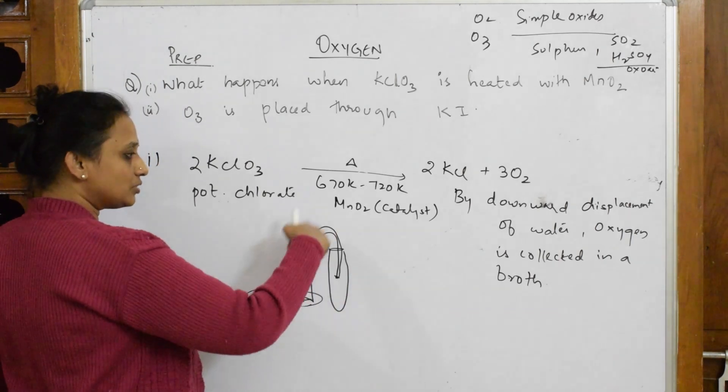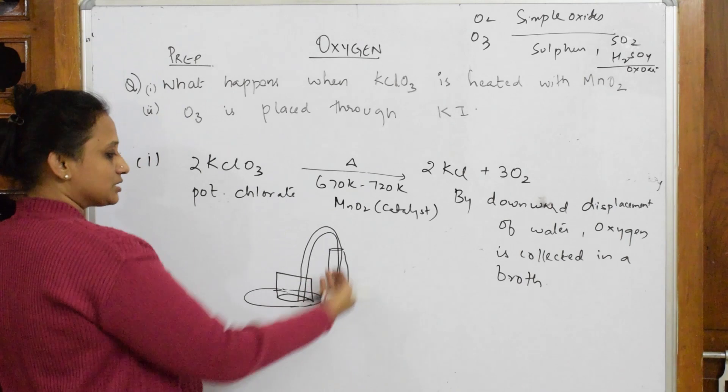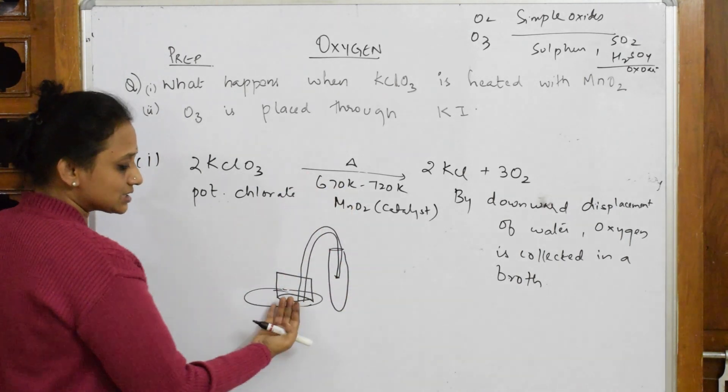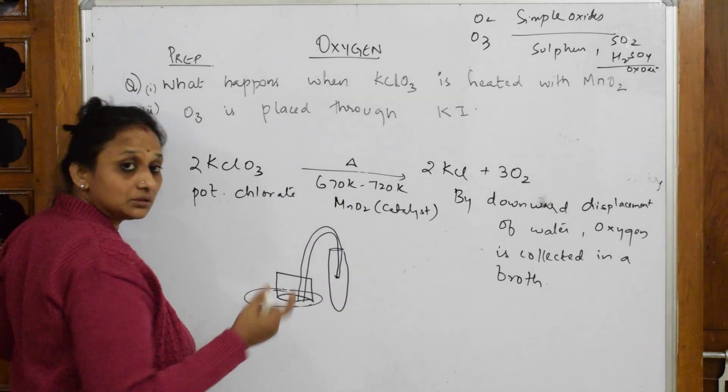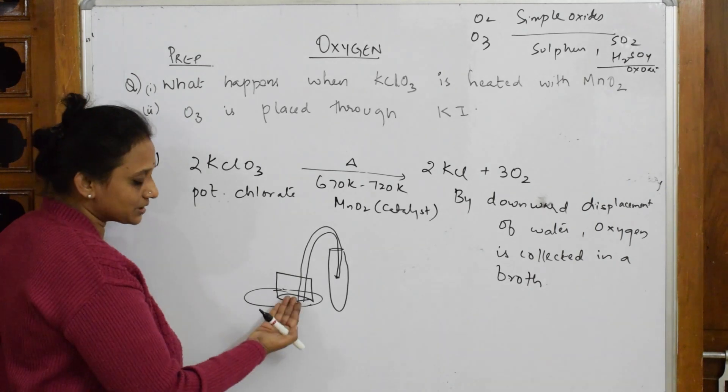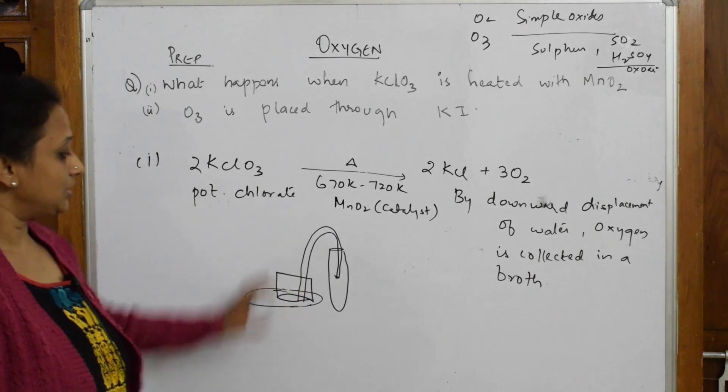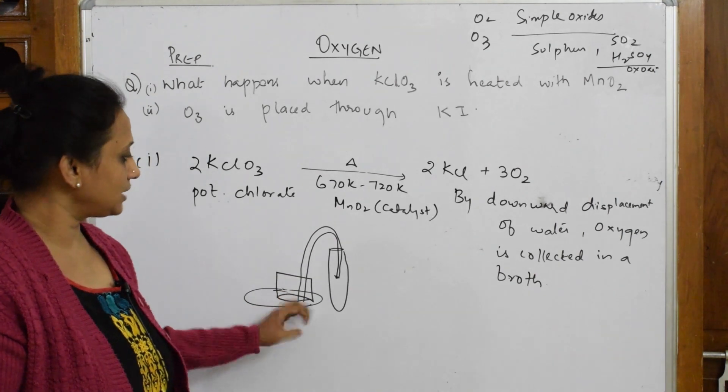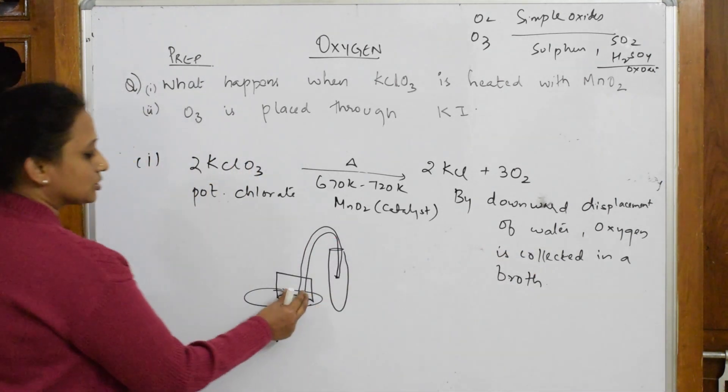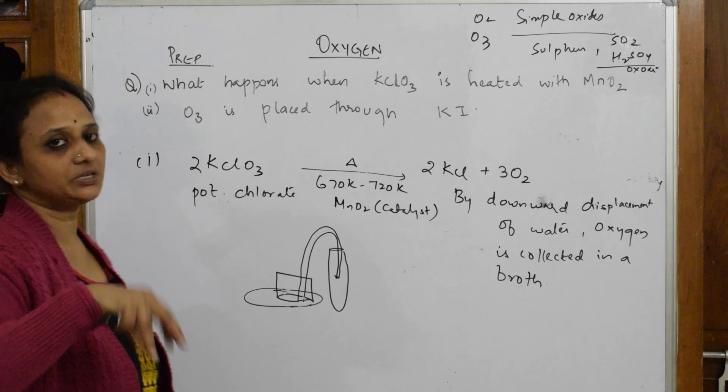Now what happens during the downward displacement? The oxygen moves and it collects in this beaker with water present in that. So this is called downward displacement of water and this oxygen is collected in this trough, this particular trough which is dipped in water.